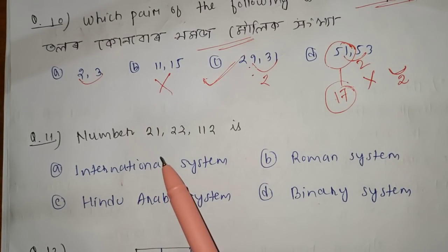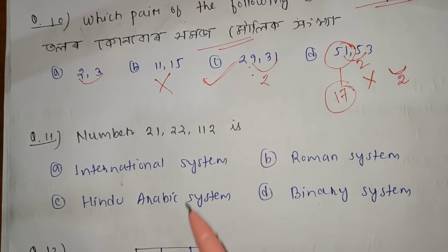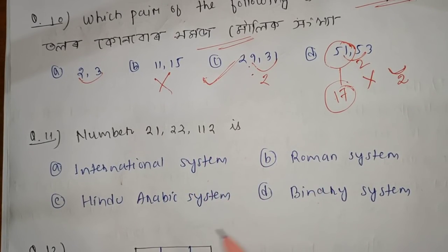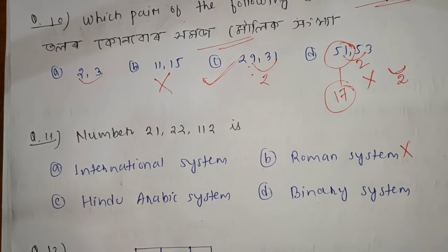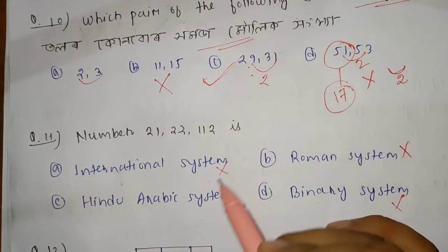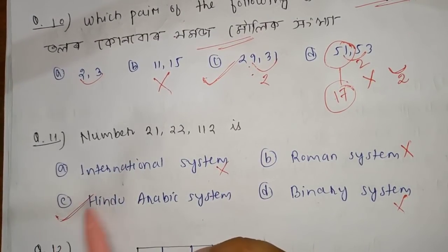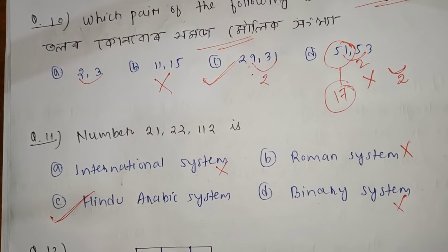The next question: 112 belongs to which number system — international system, Roman system, Hindu-Arabic system, or binary system? Roman is not the same format, and binary is not either. The correct option is C — the Hindu-Arabic system.